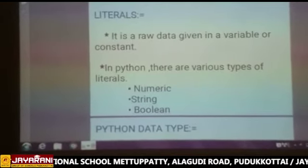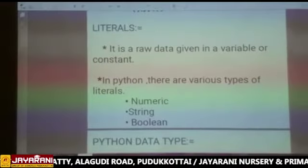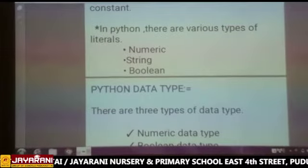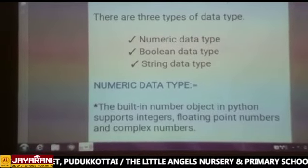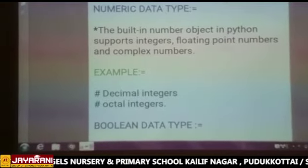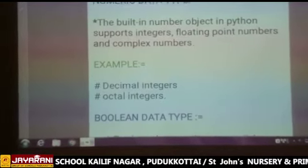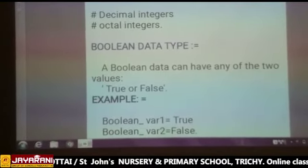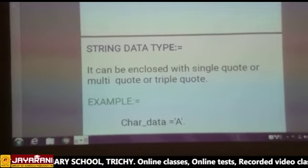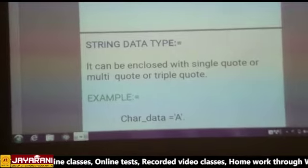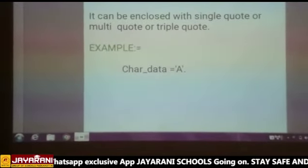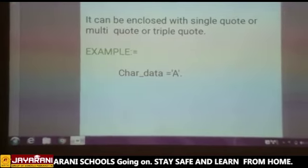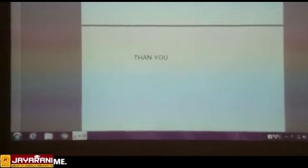Literals are the raw data given in a variable or constant. The types are numeric, string, and boolean. Python data types are numeric, boolean, and string. Numeric supports integer, floating, and complex numbers. Integer supports decimal, octal, and hexadecimal. Boolean has only two values: true or false. String data uses only characters enclosed within single, multiple, or triple quotes — that is called a string data type. In the next class, we will discuss the control statements used in Python. Thank you so much for watching my video.